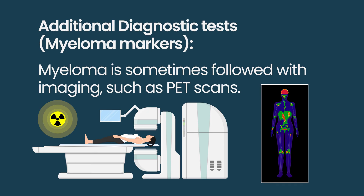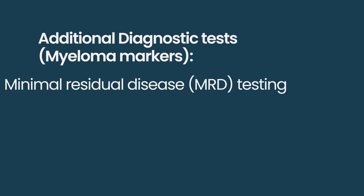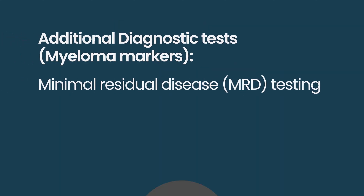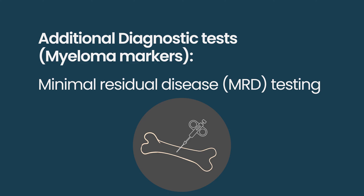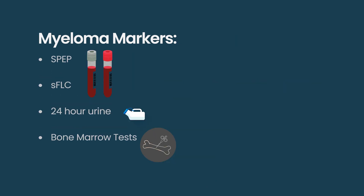For a couple of other ways to follow disease, we can use more sophisticated tests often done on bone marrow biopsies, like minimal residual disease testing, which looks at the amount of DNA from the myeloma we can detect in a patient's bone marrow biopsy. So those are just a few of the different markers we use to follow how well we're doing with treatment.